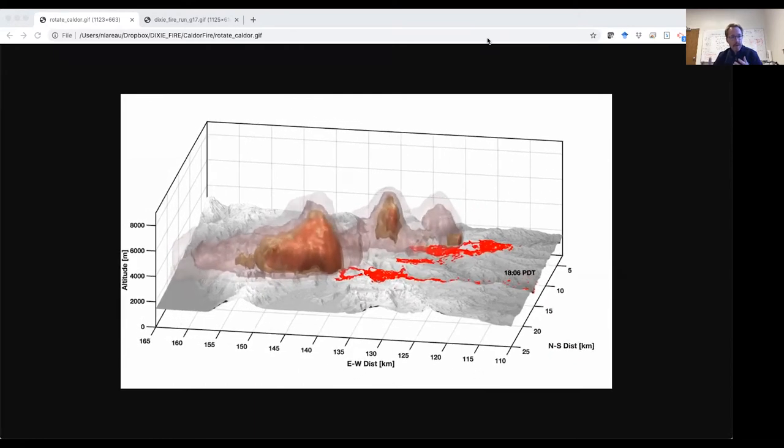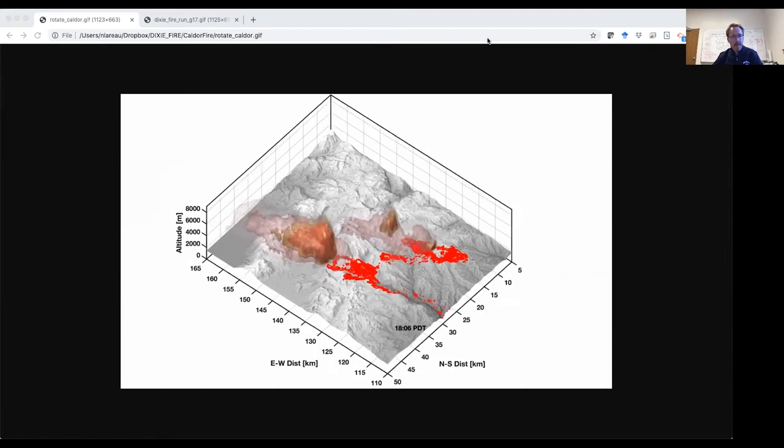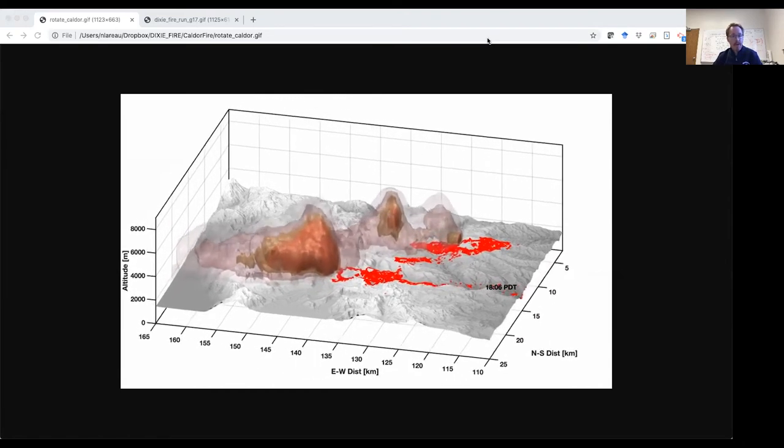Weather radars are great for giving us an understanding for the structure and evolution of these plumes, but there's some real scientific mysteries about what these radars are really seeing inside of the plume, and that's where your observations come in.